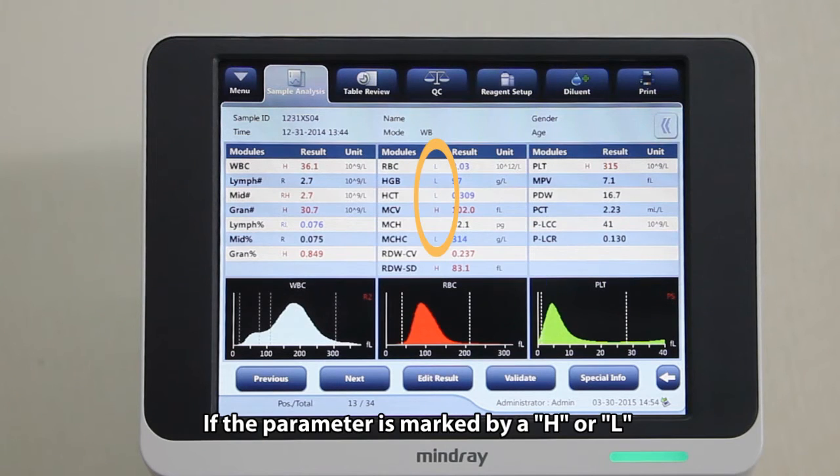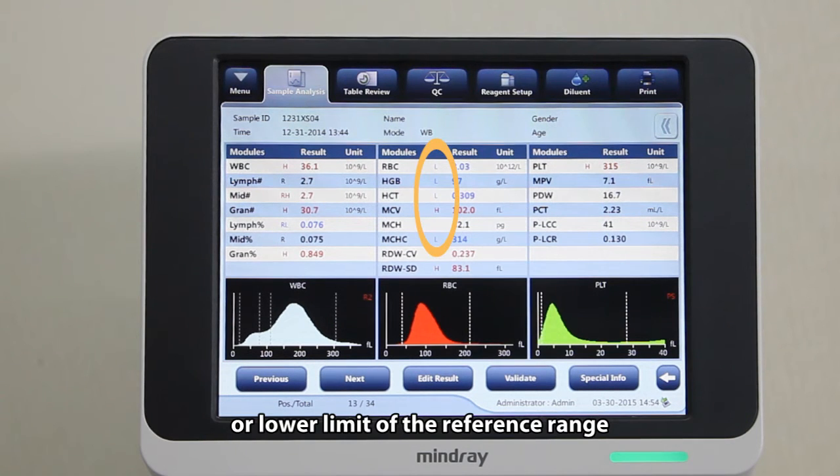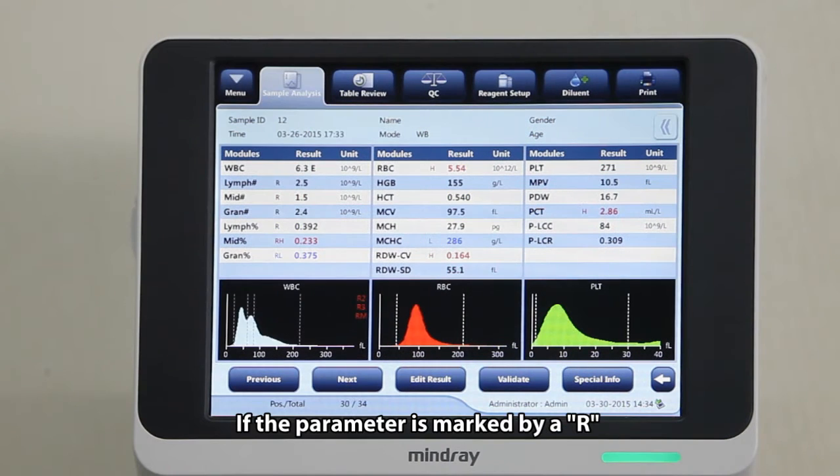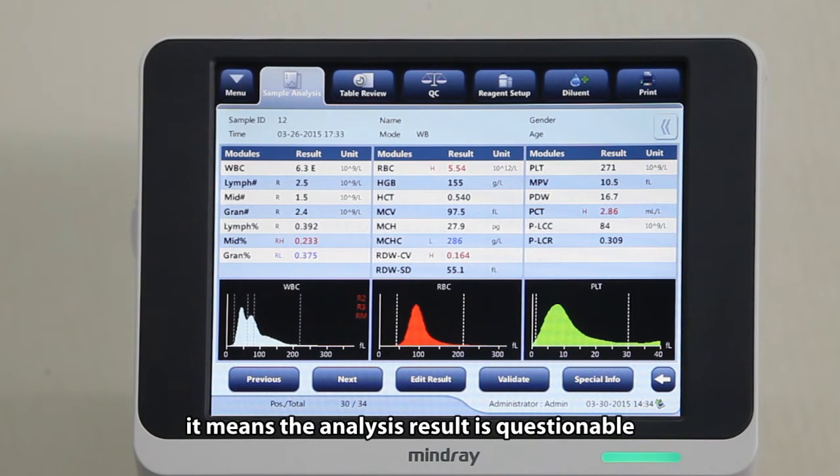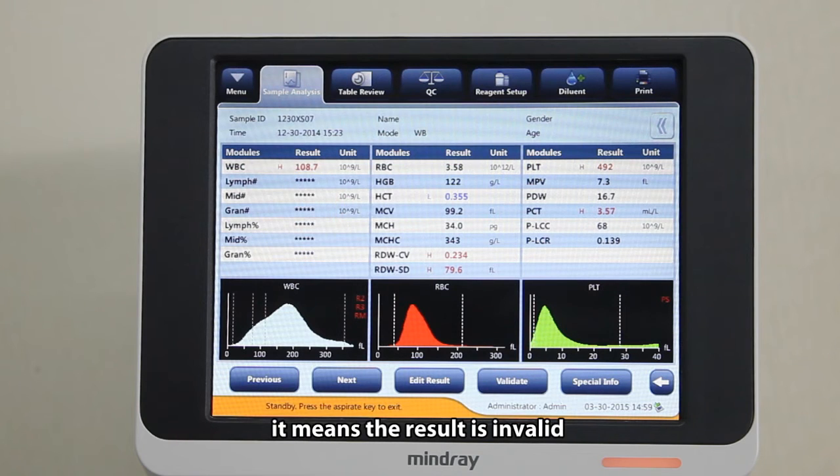If the parameter is marked by an H or L, it means the analysis result exceeds either the upper or lower limit of the reference range. If the parameter is marked by an R, it means the analysis result is questionable. If you see five asterisks as opposed to the result, it means the result is invalid.